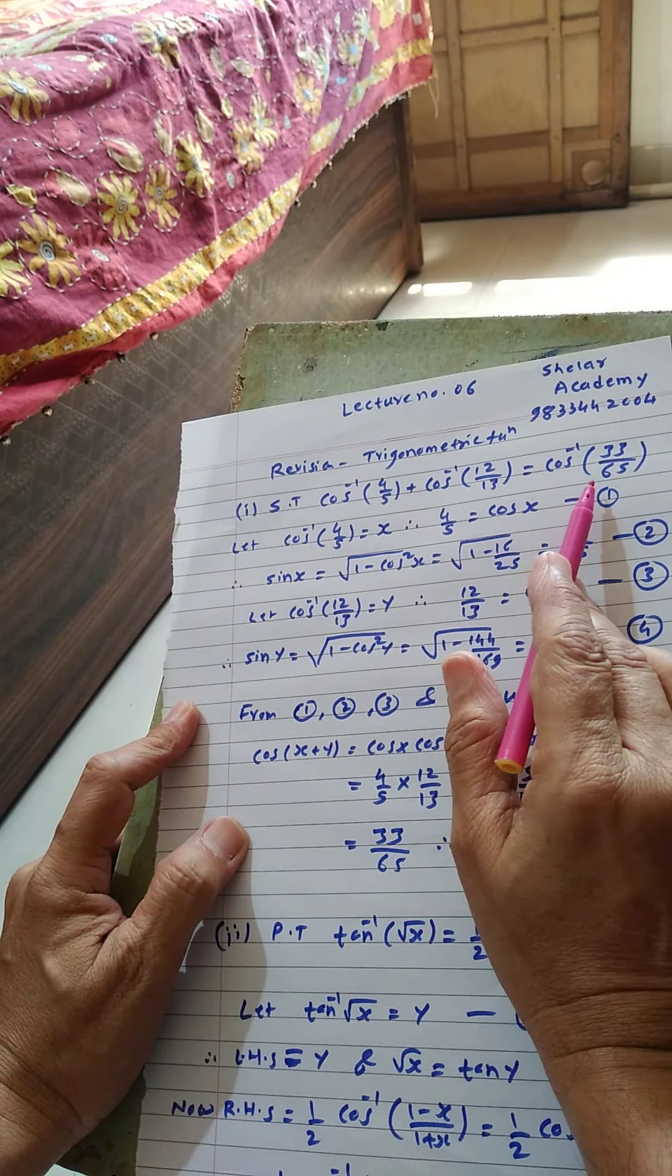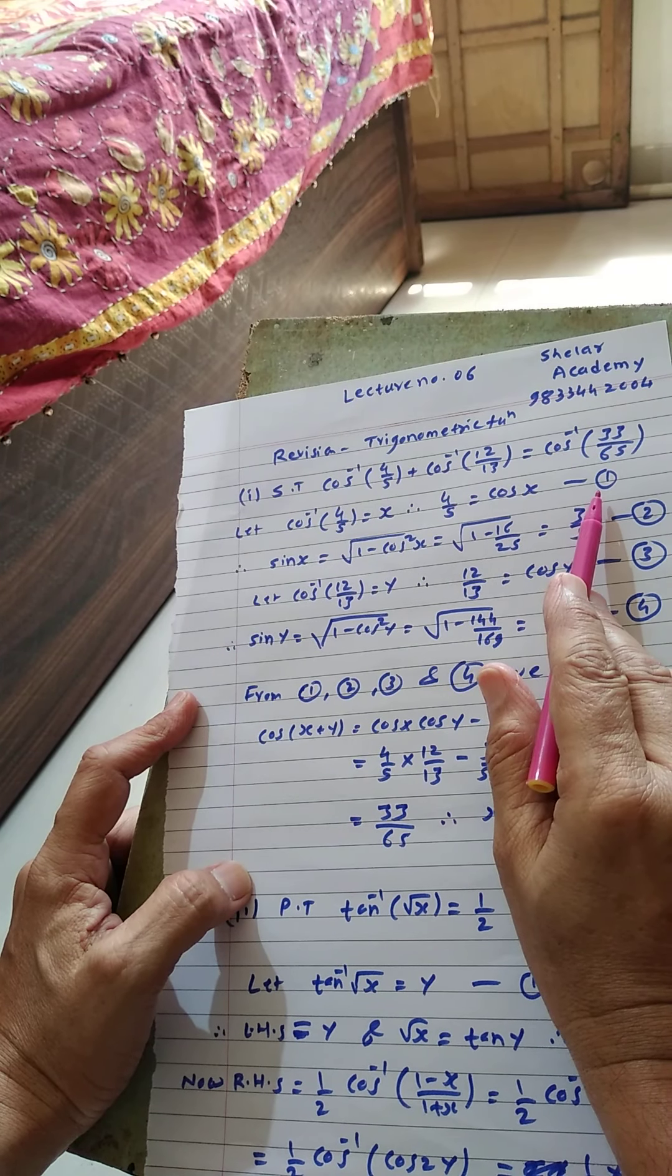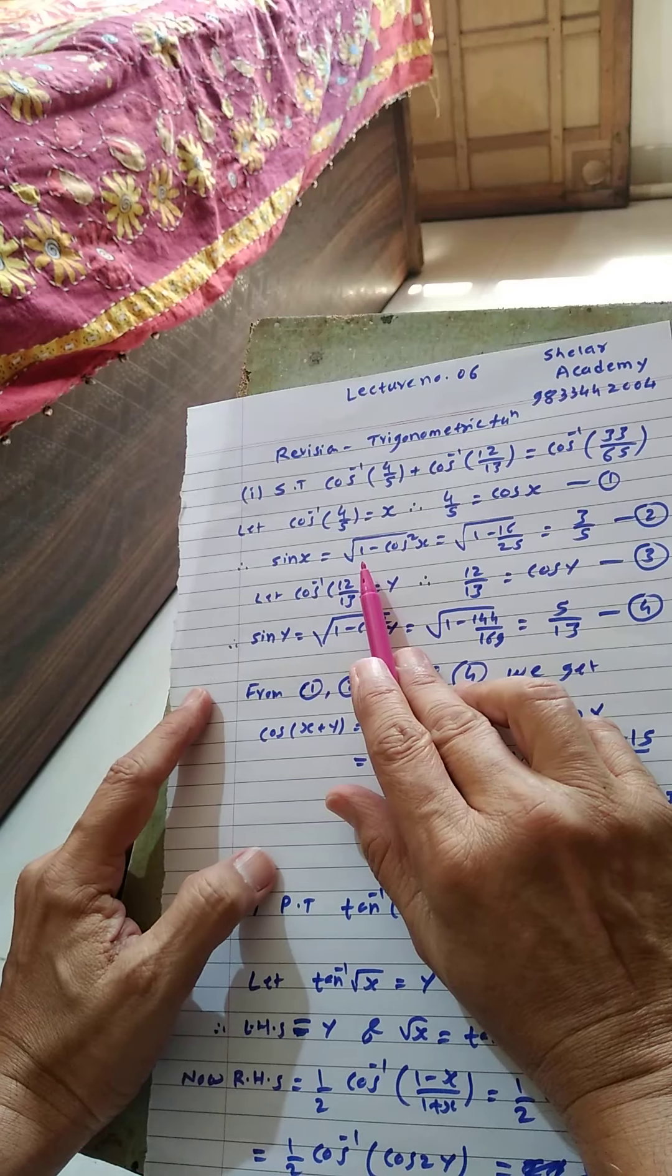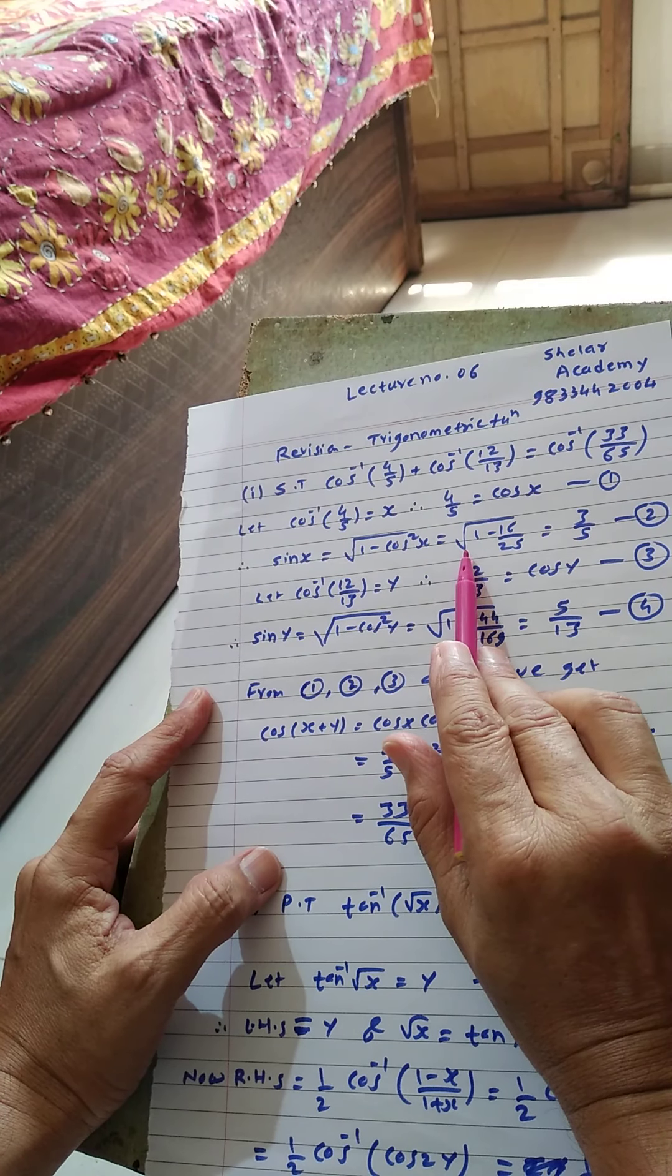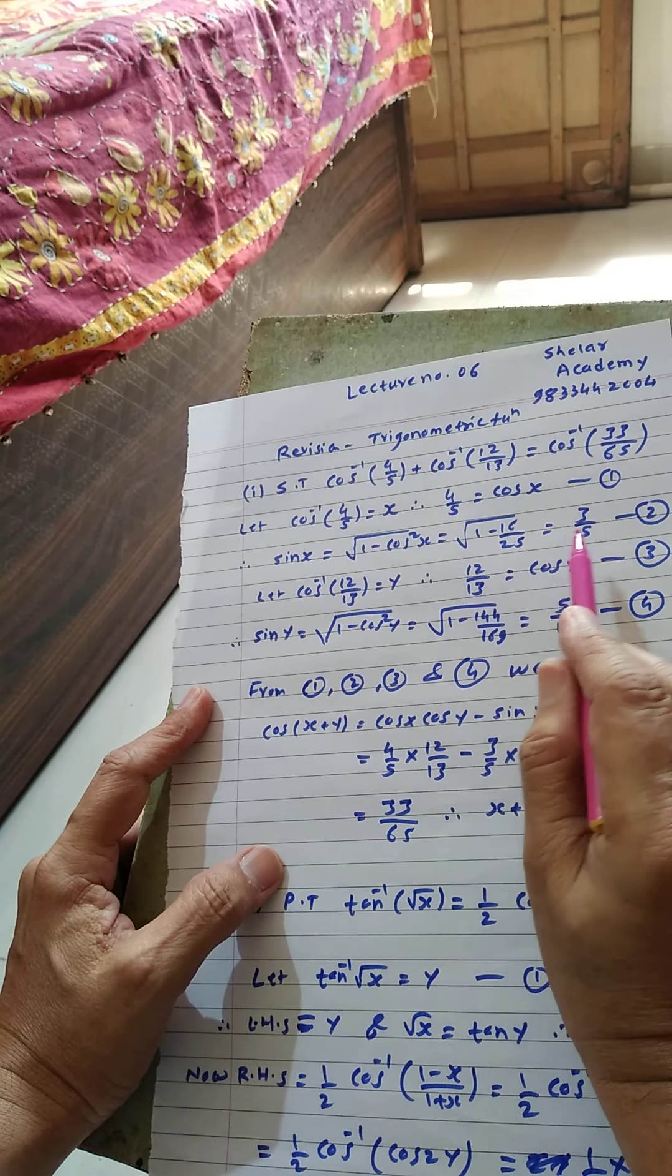Now let cos inverse 4 by 5 is equal to x and cos inverse 12 by 13 is equal to y. Therefore 4 by 5 is equal to cos x, equation number 1. From cos x we are getting sin x equals root 1 minus cos square x equals root 1 minus 16 by 25, that is equal to 3 by 5, equation number 2, that is the value for sin x.